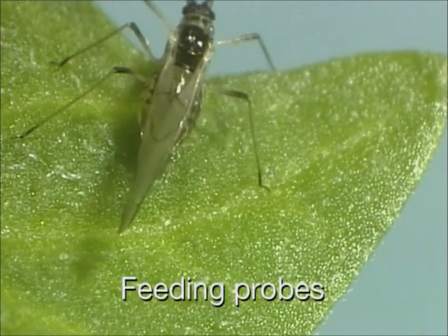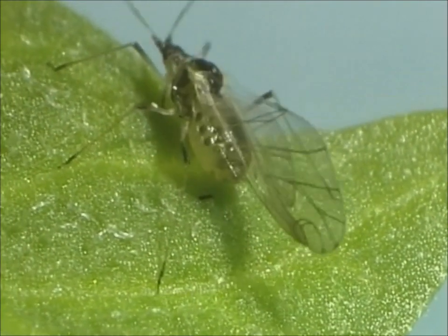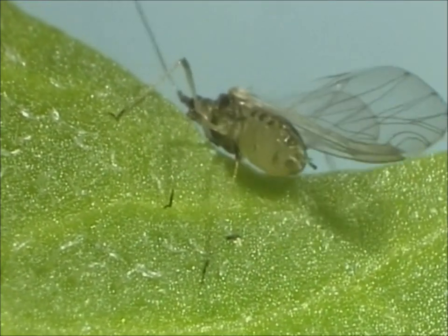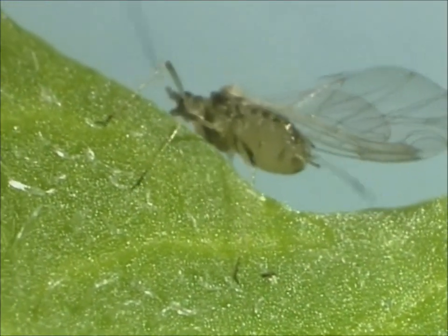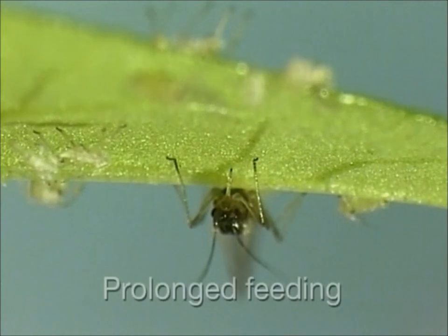If, on the basis of feeding probes, the aphid has recognized the plant as a suitable host, it typically moves to the underside of the leaf in order to start prolonged feeding.